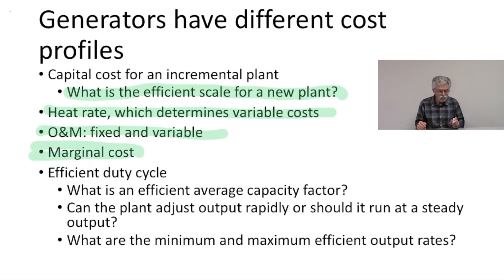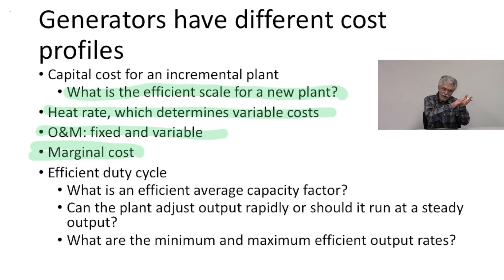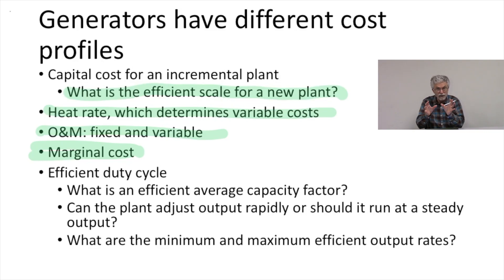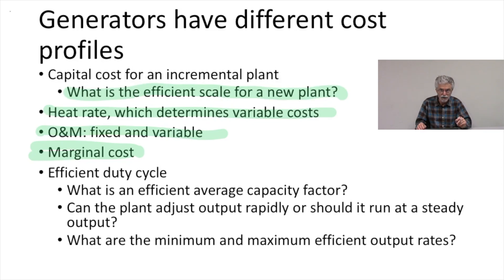We want to know what the marginal cost of generation is. The marginal cost of generating with a given power plant is going to change depending on whether we're running it at a very low capacity factor, or at its engineering target capacity factor where it'll probably have its lowest heat rate, or at a very high capacity factor where the heat rate will tend to go back up again. For the purposes of our simple examples, we're going to generally assume that the heat rate is constant.